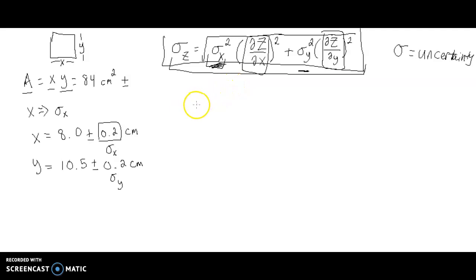So what I'm going to do is I'm just going to write this out. So the uncertainty in my area is going to be equal to the uncertainty in my x squared, multiplied by this funny business. And here, I didn't write this down, but I'm assuming that this function z, I'm assuming that z is a function of x and y in the following form, x times y.